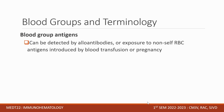Blood group antigens can be detected by alloantibodies, or by exposure to non-self RBC antigens introduced by blood transfusion or pregnancy. Some antibodies are not naturally occurring — we are only immunized through exposure to blood transfusion or pregnancy.